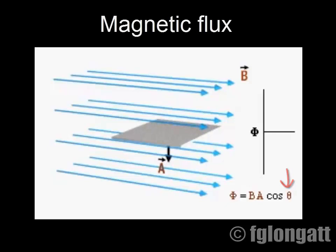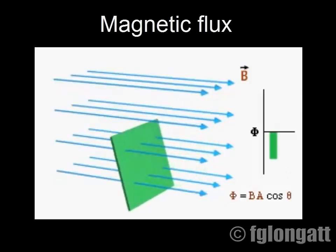When rotated past 90 degrees, the surface normal vector and the magnetic field vectors are in generally opposite directions. Now the flux is negative.